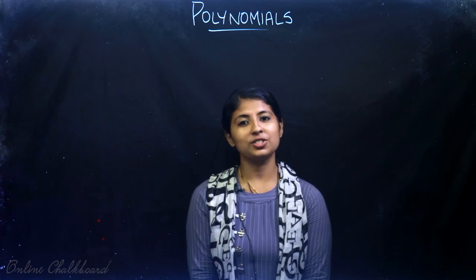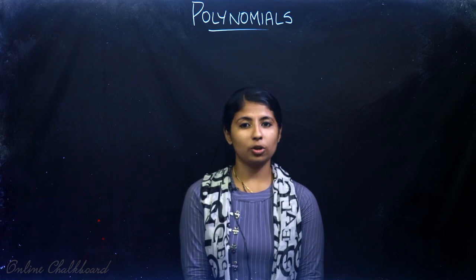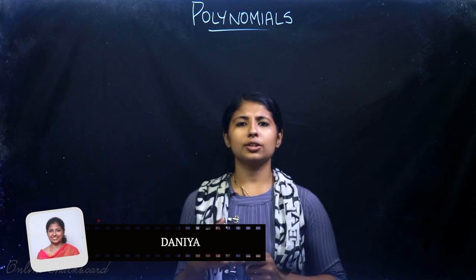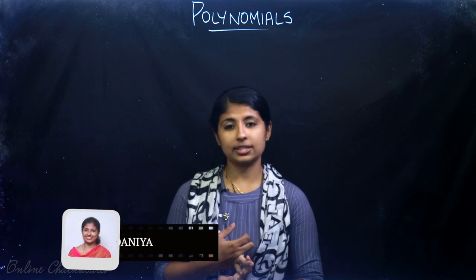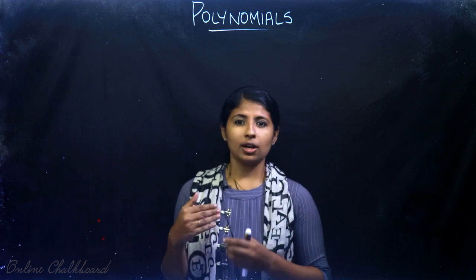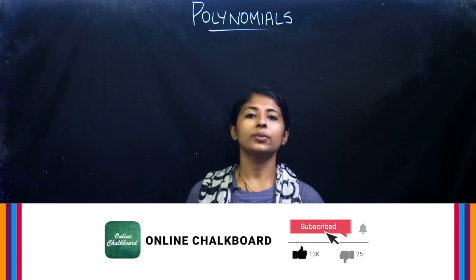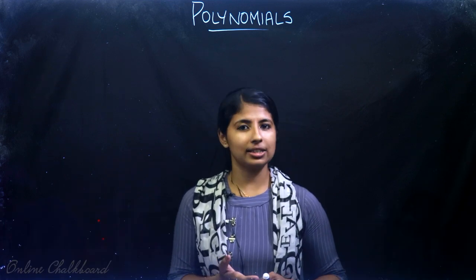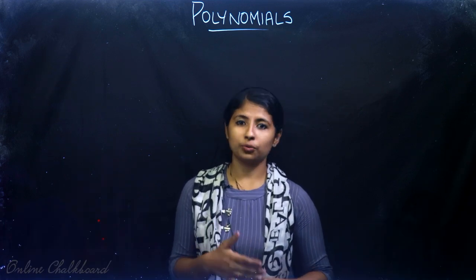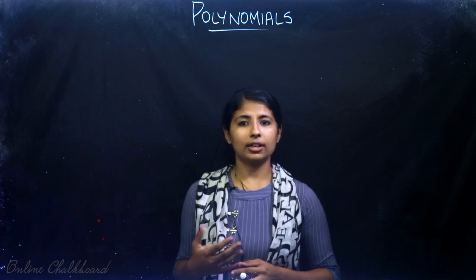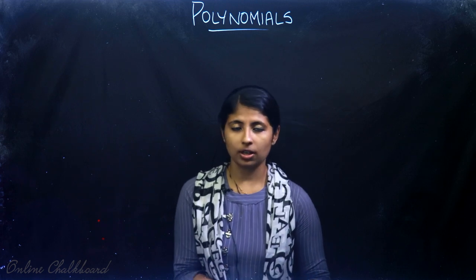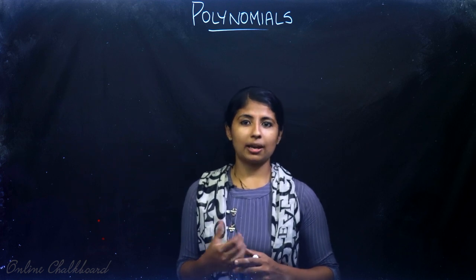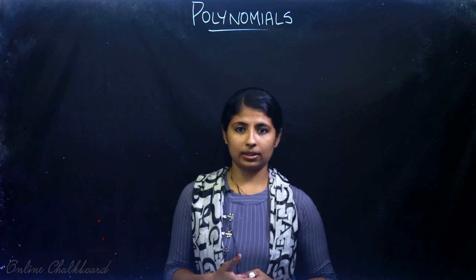Hello friends, welcome back to Online Chalkboard. We are dealing with Chapter 2 Polynomials of Class 10 CBSE, and we have discussed so far about what is the zero of a polynomial, how it can be graphically represented, and the relation between coefficients and zeros of the polynomial. We also did various problems. If you find these videos useful, share with your friends. Previous video links are in the description box, and please subscribe and press the notification button.